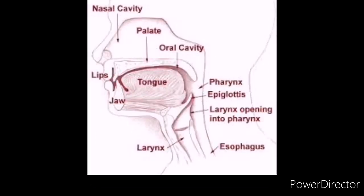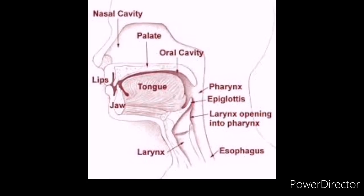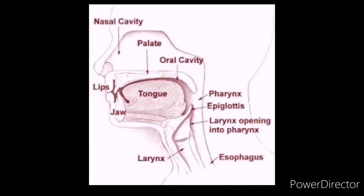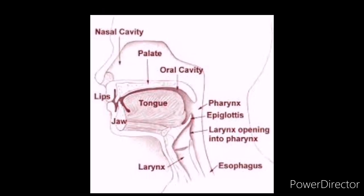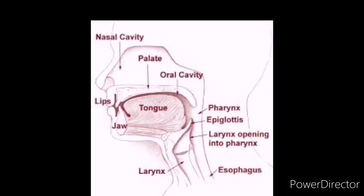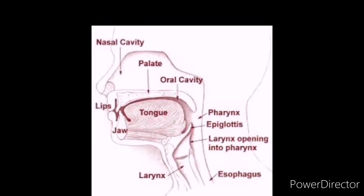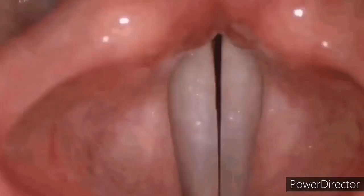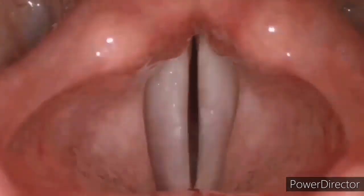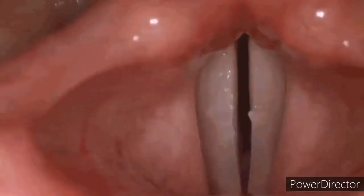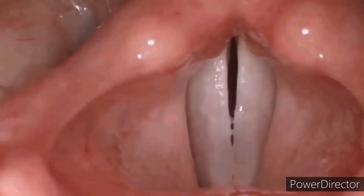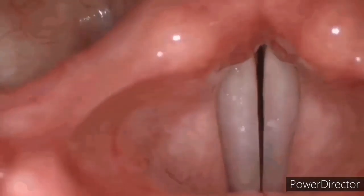Two vocal cords are stretched across the voice box. A narrow slit is present between the two vocal cords so as to provide a passage to the air. When air is pushed by the lungs through the narrow slit between the cords, it makes the cords vibrate. Thus, vibrating cords produce sound.